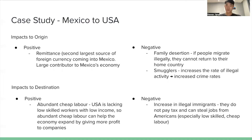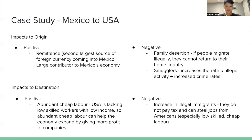High crime rates are definitely a negative impact. For the impact on the destination, the USA will have more cheap labor, as the country is lacking low-skilled laborers. Mexican immigrants can help the economy expand by giving more profits to companies — and at least they will get out of poverty themselves, since the minimum wage is seven to eight times that of Mexico. The negative impact is that illegal immigrants do not pay tax, and they could also steal jobs from Americans.